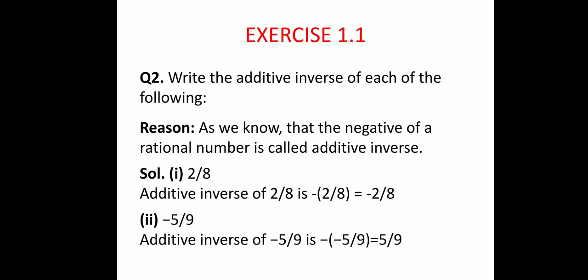The first part is 2 over 8. So the additive inverse of 2 by 8 is minus of 2 over 8, that is equal to minus 2 by 8. Now let us take the second part, which is equal to minus 5 over 9. The additive inverse of minus 5 over 9 is the negative of this rational number, which is equal to positive 5 over 9.